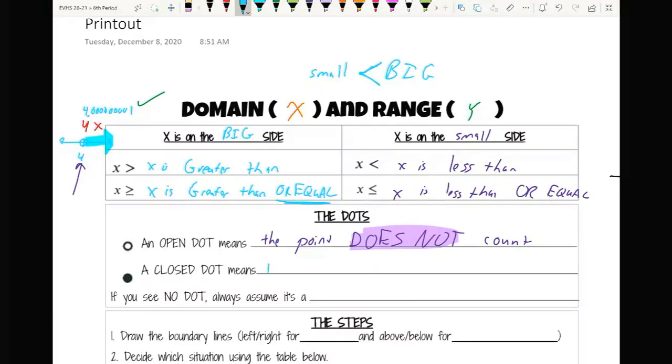A closed dot means the point does count. And when I say count there, I don't mean adding 1, 2, 3. I mean it's part of the solution or it's not. So if you do not see a dot, always assume it is a closed dot. That will become really important on one of our examples in a minute.